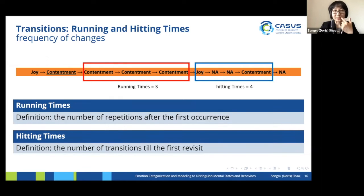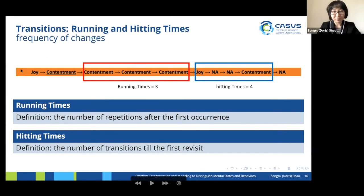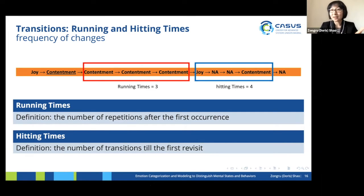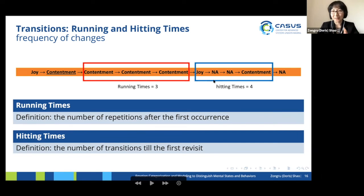After getting the time series, we use Markov chain to study the transitions. We define two metrics: running time, defined as the number of repeated transitions after the first occurrence (three in this case); and hitting time, defined as the number of transitions until the first visit (four in this case). There is another way to define these, but it doesn't matter because we are doing a relative comparison across different people.